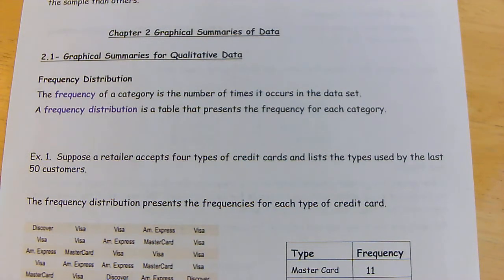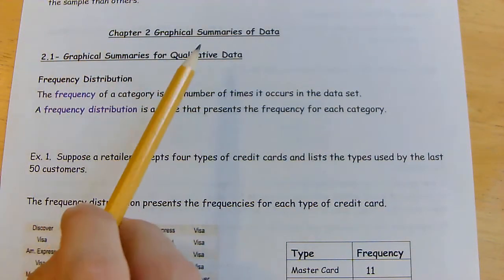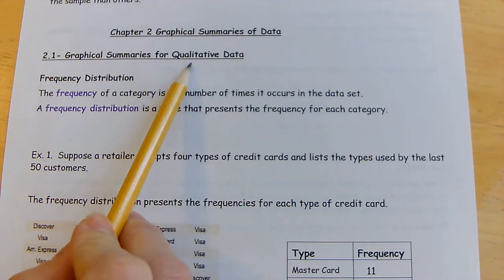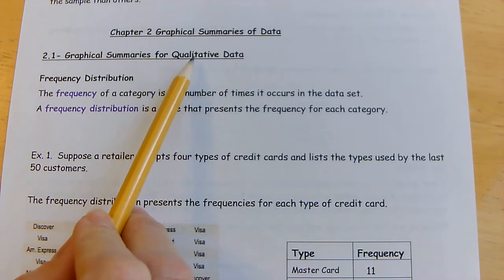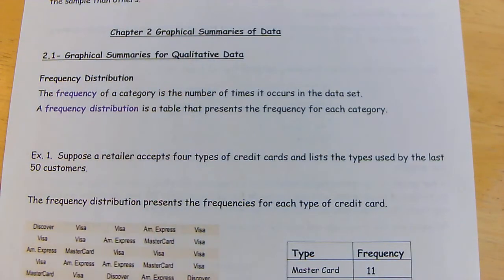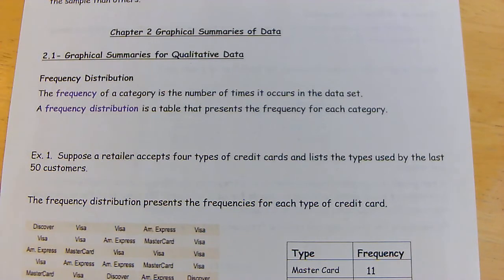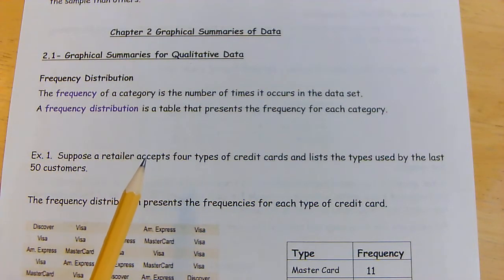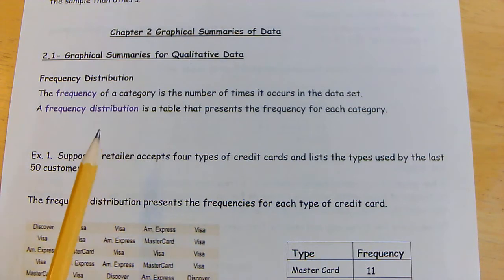Chapter 2 is about summaries of data. Section 2.1 is for qualitative data — remember, that's a description or a quality. A frequency distribution: the frequency of a category is the number of times it occurs in the data set.